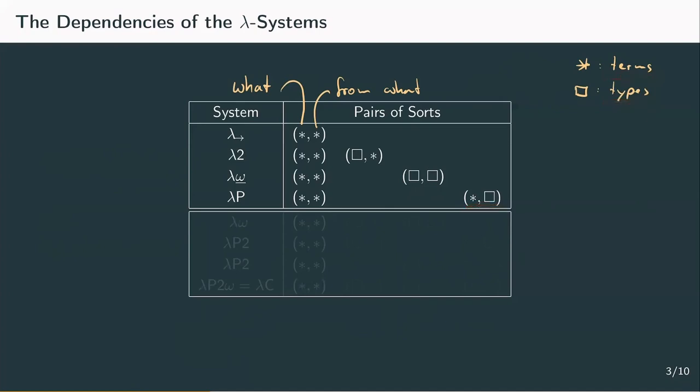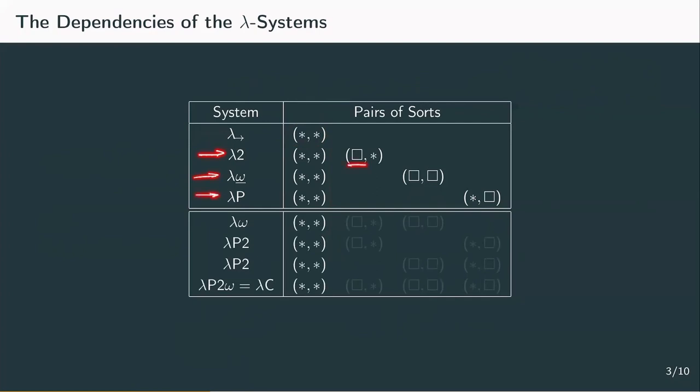With this, we can formalize the correspondence between systems and their combinations like so. Every system is an extension of the simply typed lambda calculus, so every system has the pair star star.